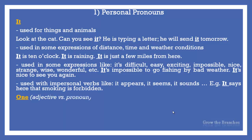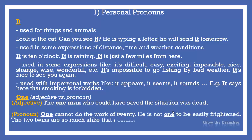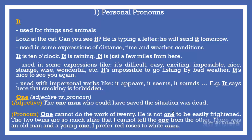One is a numeral. It can be an adjective when it precedes a noun, as in the example: The one man who could have saved the situation was dead. One can also be used as a pronoun: One cannot do the work of twenty. He is not one to be easily frightened. The two twins are so much alike that I cannot tell the one from the other. There was an old man and a young one. I prefer red roses to white ones.